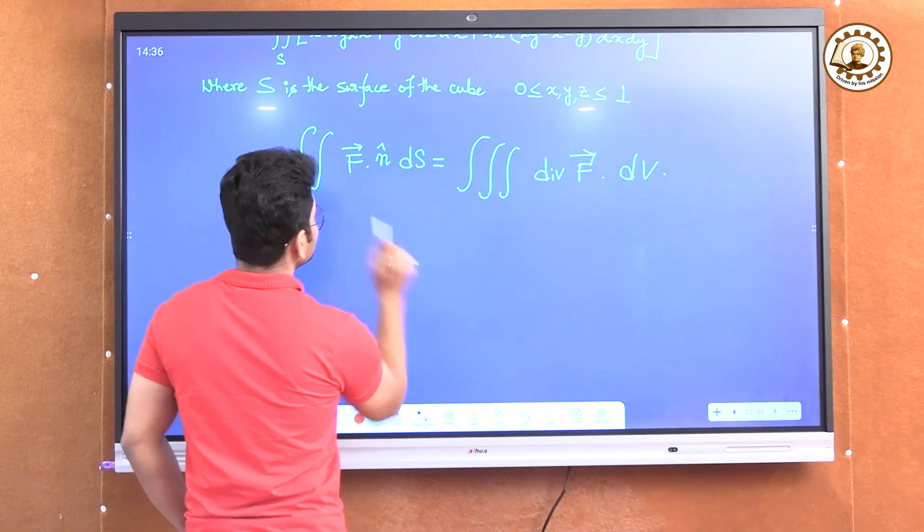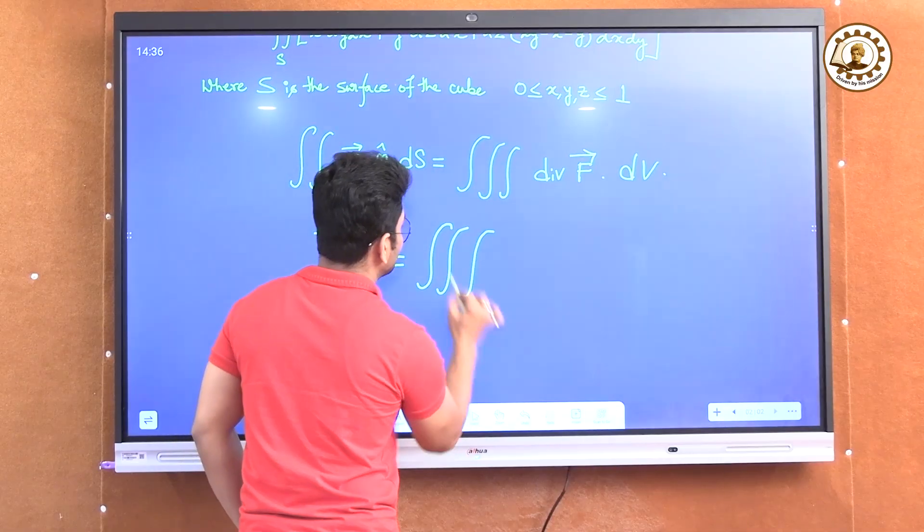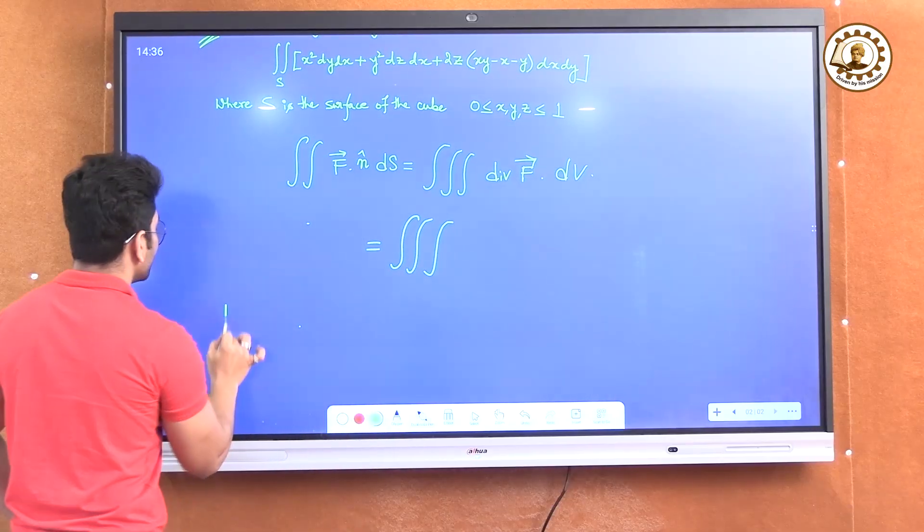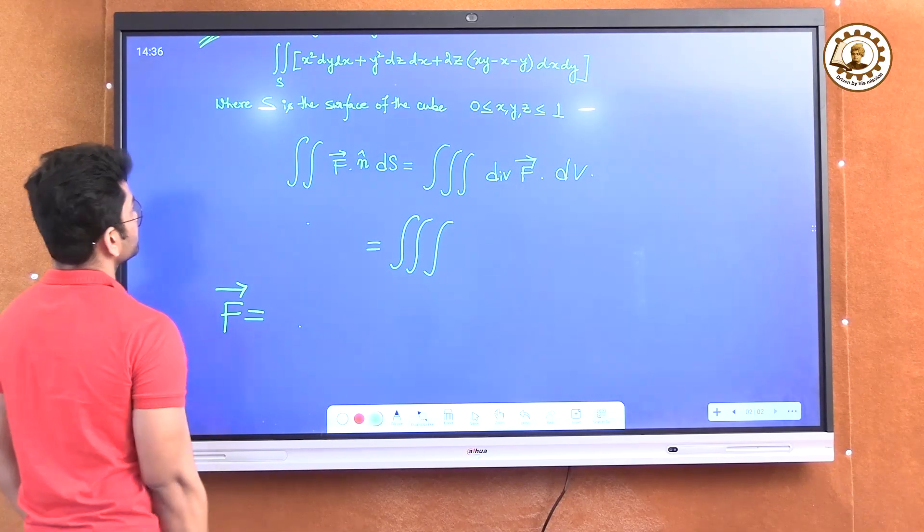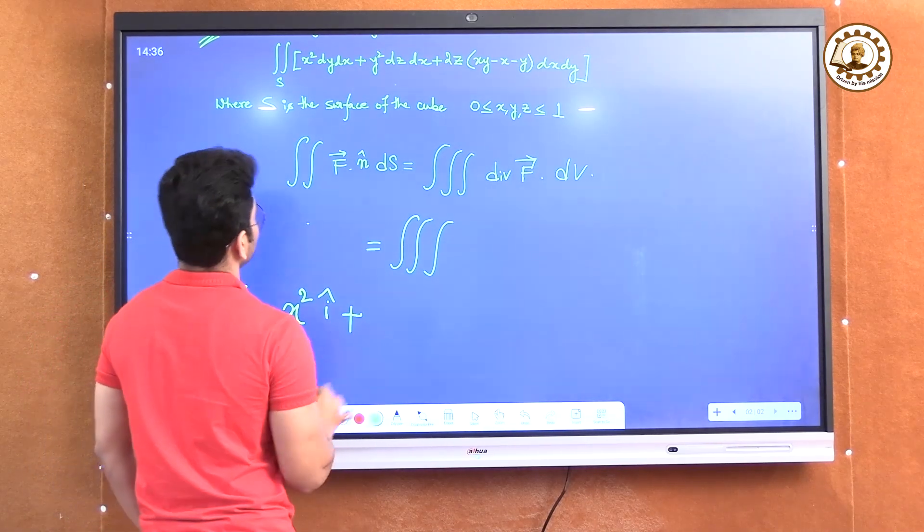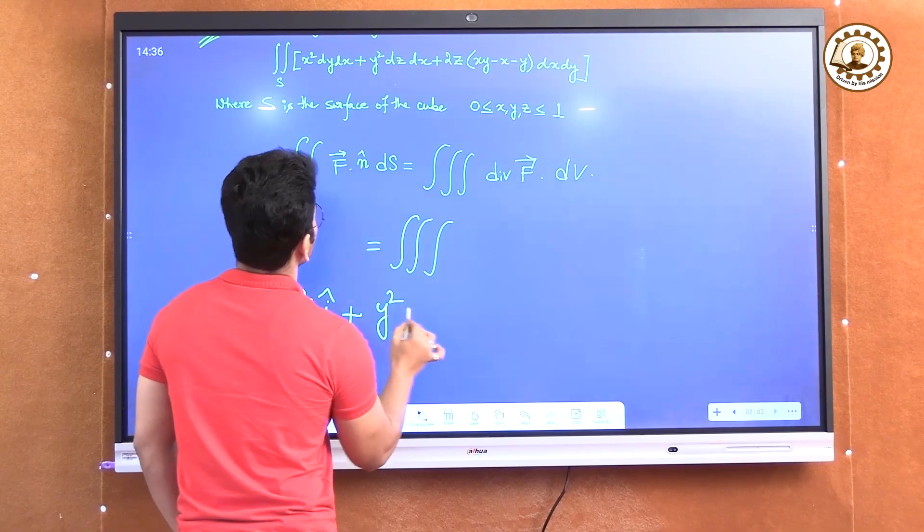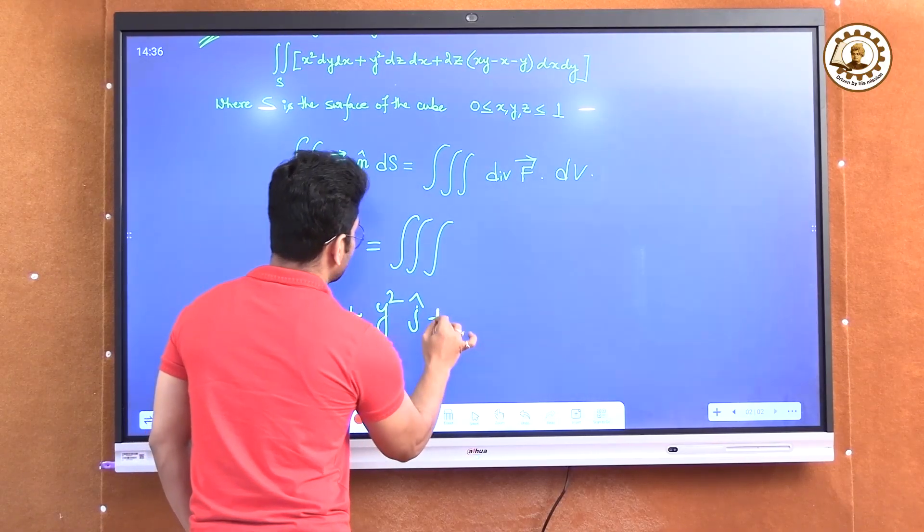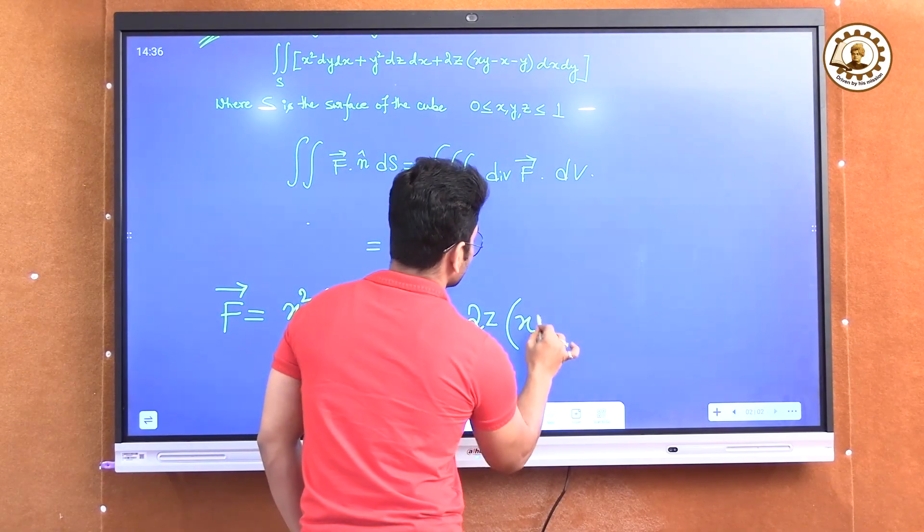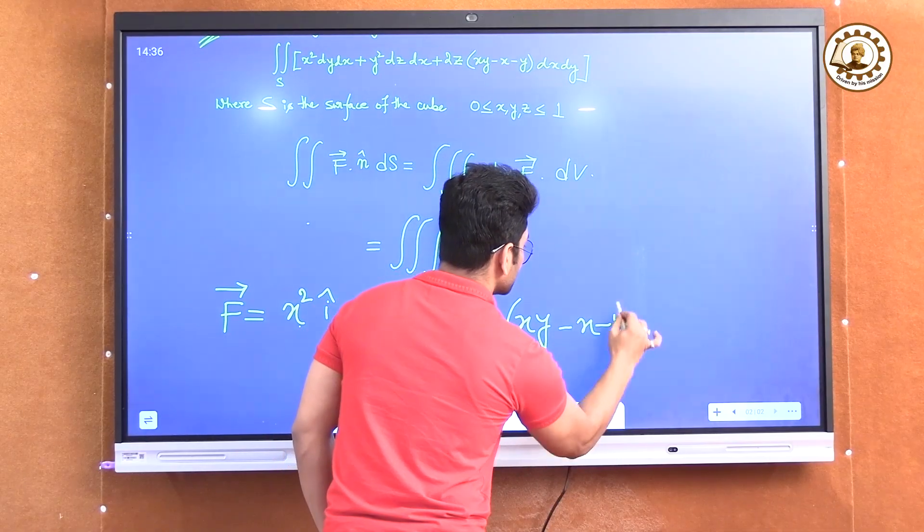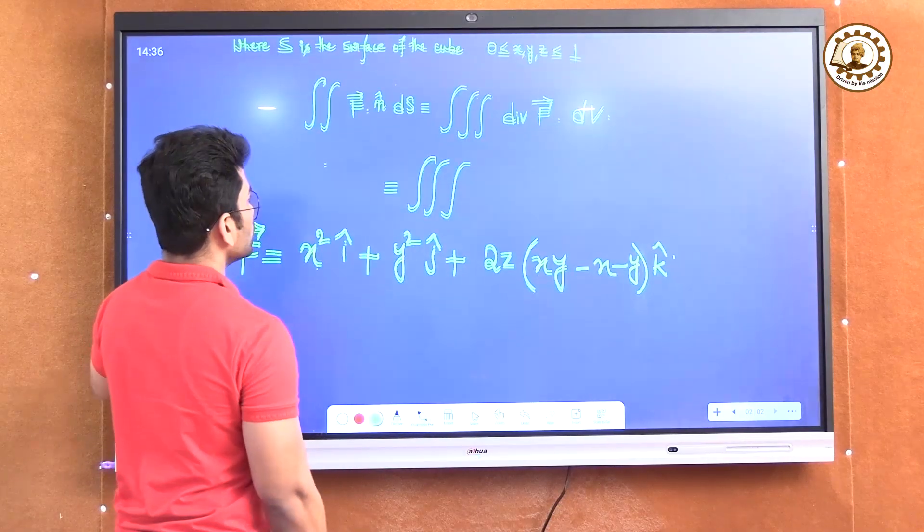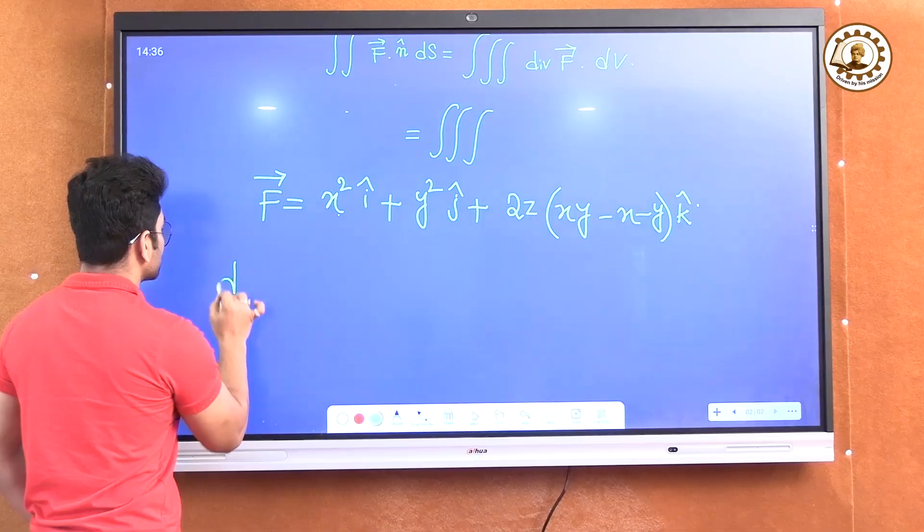Here f can be written as x square i cap plus y square j cap plus 2z into xy minus x minus y into k cap. This is my f. So what is divergence of f?